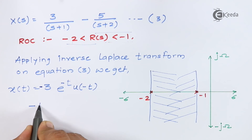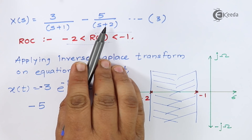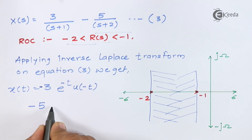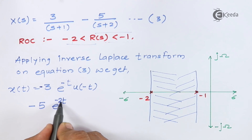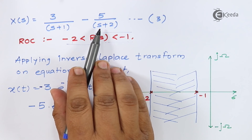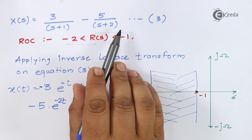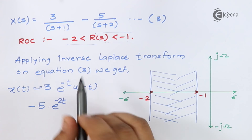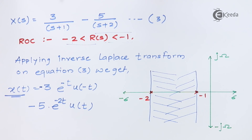For the second term, -5/(s+2): the shift is +2 so the exponential is e^(-2t). The pole at -2 produces a right-sided ROC, so the inverse Laplace gives u(t). Combined with the -5 constant and the minus sign: this term becomes +5 e^(-2t) u(t). This is the complete answer: x(t) = -3 e^(-t) u(-t) + 5 e^(-2t) u(t).